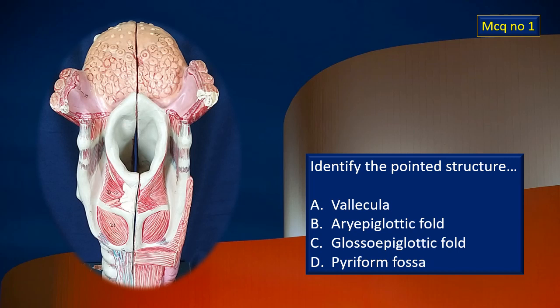First MCQ: there is a flashing arrow. The model is the posterior view of the larynx. Identify the pointed structure indicated by the flashing arrow. There are four options. Look at it carefully and then give your answer.